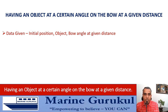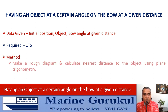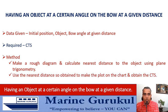We are given the initial position, the object, the bow angle required, and the distance at which the bow angle is to be made. We are required to find out the course to steer to have the object at the given bow angle at the given distance. In this type of question, we first make a rough diagram using the information provided and calculate the nearest distance the vessel will be from the object, which can be easily calculated using plane trigonometry. Once the nearest distance is found, it can be used to make the plot on the chart.